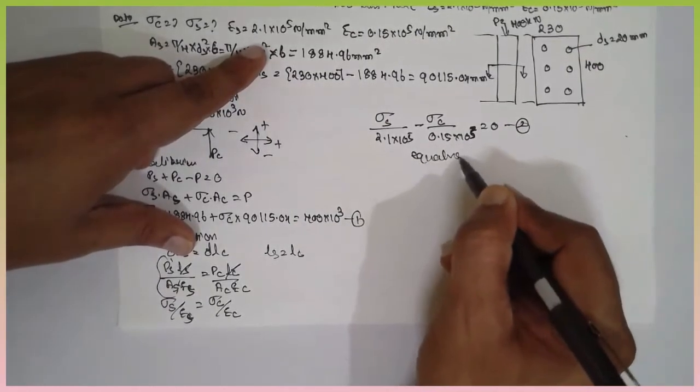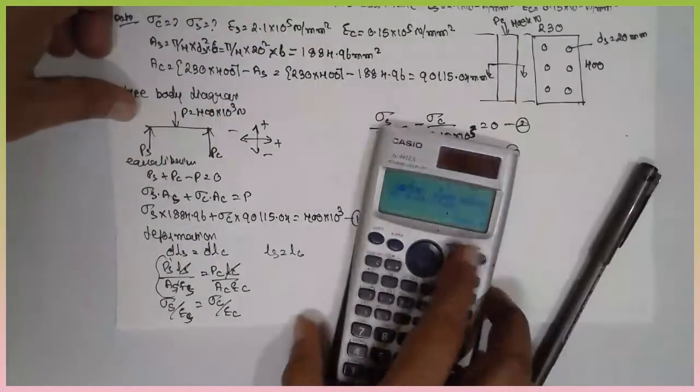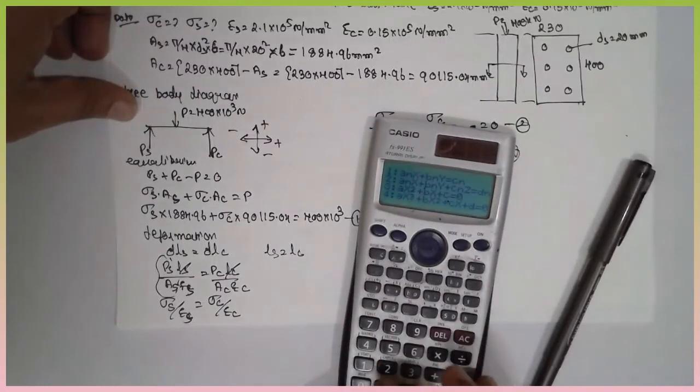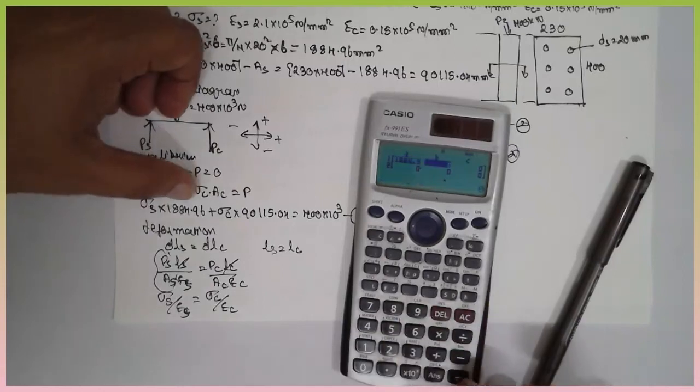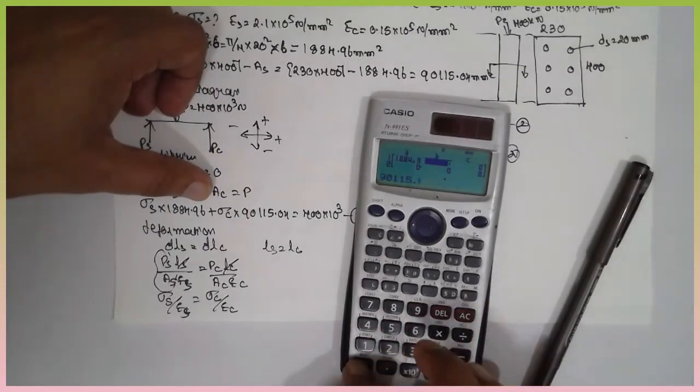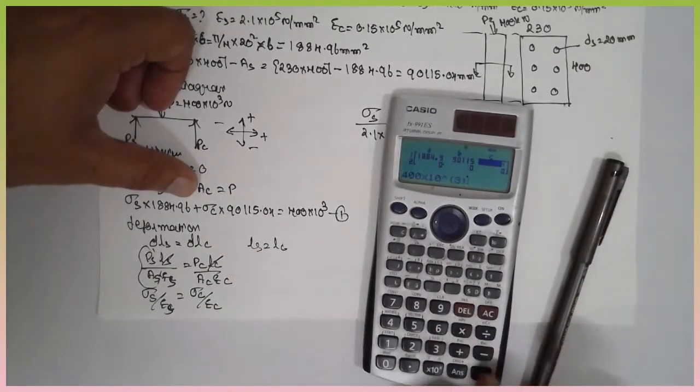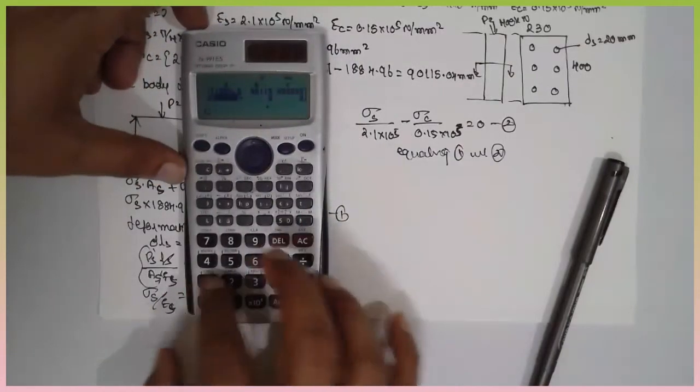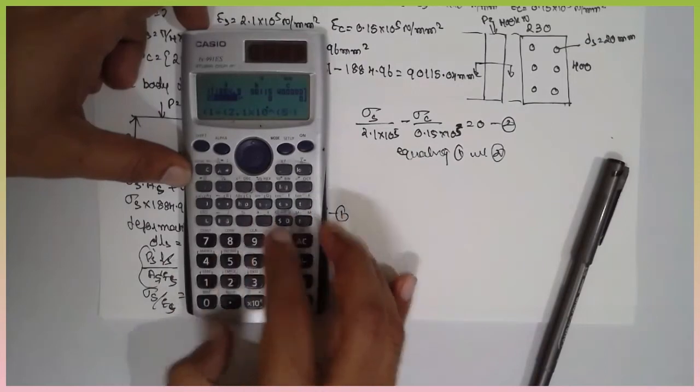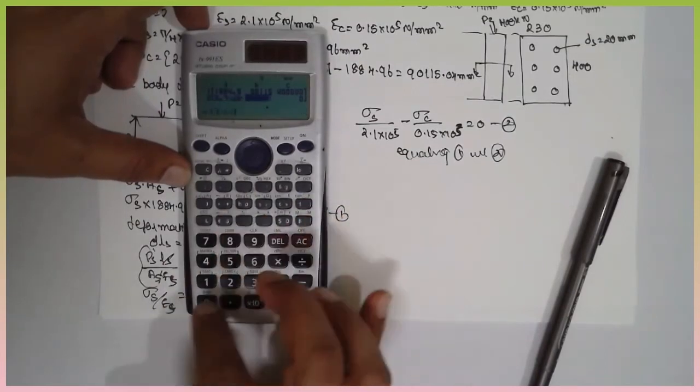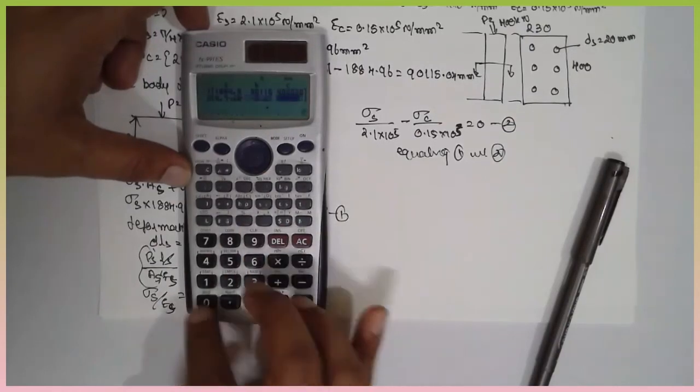Equating 1 and 2. Sigma s 1884.96 plus sigma c 90115.04 equals 400 into 10 raise to 3. Sigma s 1 divided by 2.1 into 10 raise to 5 minus sigma c 1 divided by 0.15 into 10 raise to 5 equals 0.